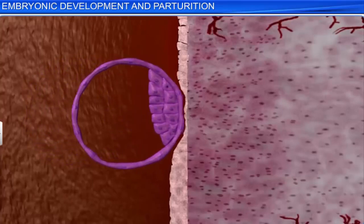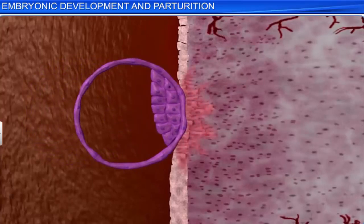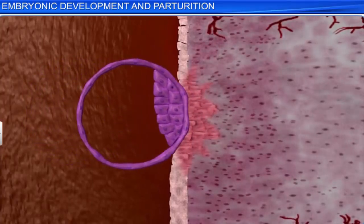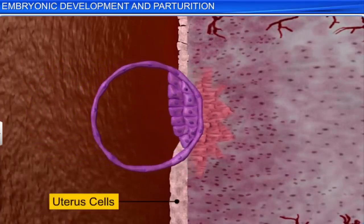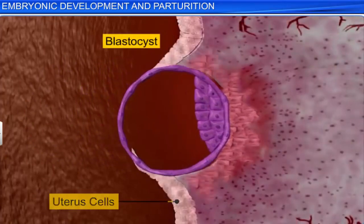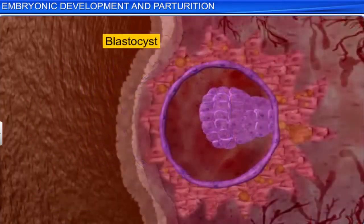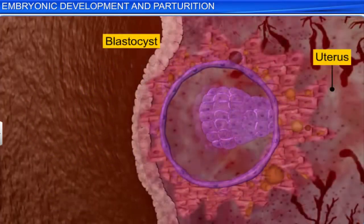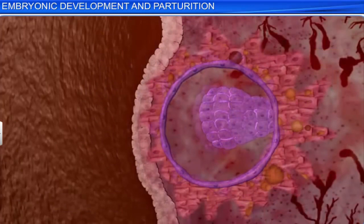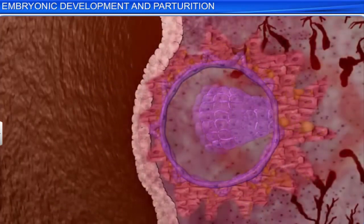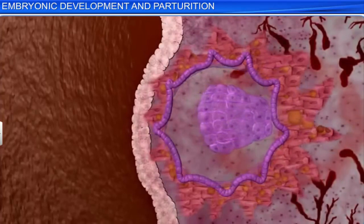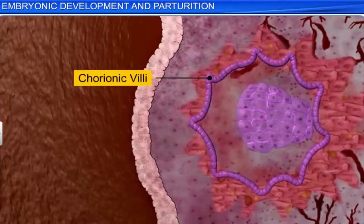After implantation, the trophoblast grows further, which causes the blastocyst to sink in and get covered by the cells of the uterus. As the blastocyst sinks further into the uterus, finger-like projections called chorionic villi start appearing on the trophoblast.